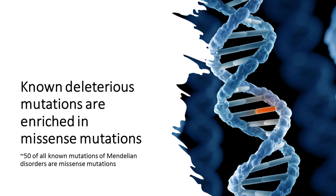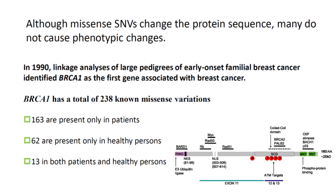However, not all missense SNVs cause phenotypic changes. For instance, BRCA1 was the first gene associated with breast cancer in 1990, based on linkage analysis of large pedigrees of early-onset familial breast cancer. BRCA1 has a total of 238 known missense mutations: 163 are present only in patients, 62 are present only in healthy persons, and 13 are found in both patients and healthy persons. Furthermore, even missense variations seen only in patients are not all causal.